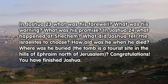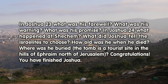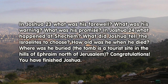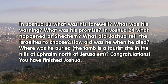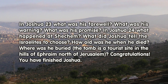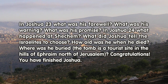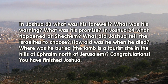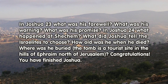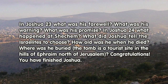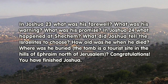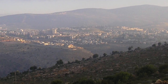In Joshua 24: What happened at Shechem? What did Joshua tell the Israelites to choose? How old was he when he died? Where was he buried? The tomb is a tourist site in the hills of Ephraim, north of Jerusalem. Congratulations, you've finished Joshua.